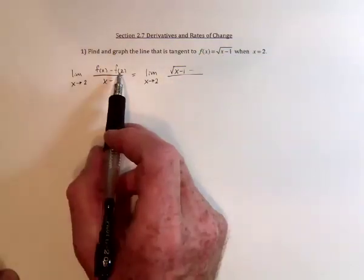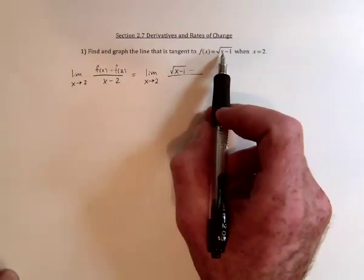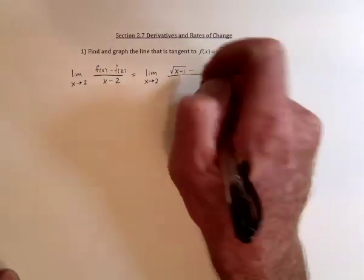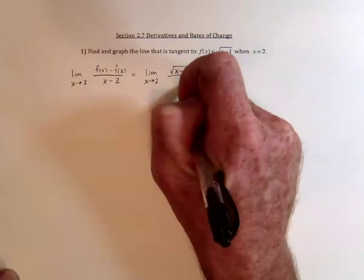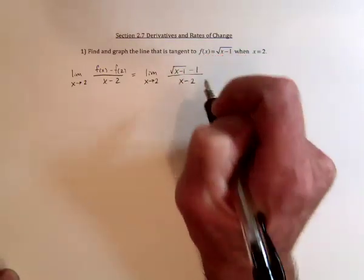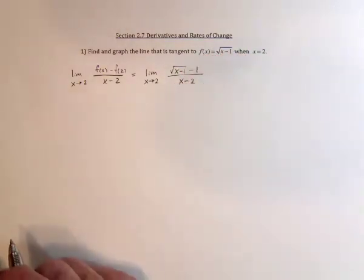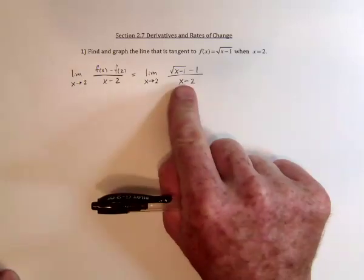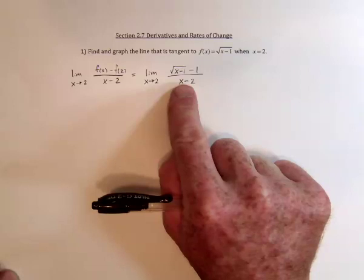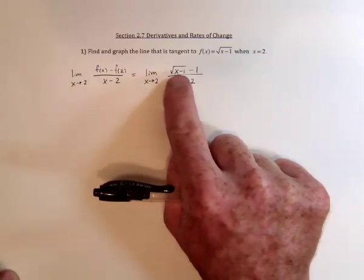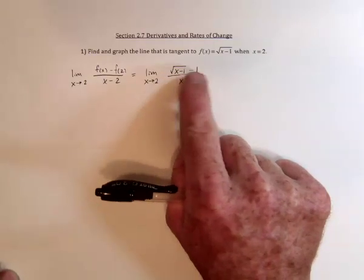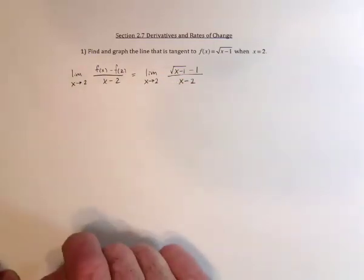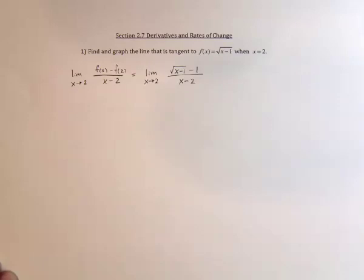Substitute a 2 into the function — that's going to be 2 minus 1, so we've got the square root of 1. The denominator is still x minus 2. If we were to substitute a 2 in, we would have division by 0, which is not good. We would also have 1 minus 1 on top, which means it's indeterminate form. So we need to use some algebra to simplify this.